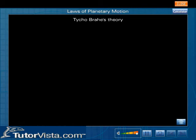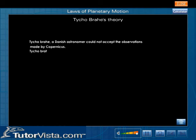Tycho Brahe's Theory: Tycho Brahe, a Danish astronomer, could not accept the observations made by Copernicus. Tycho Brahe's observations were far more accurate than those made by Copernicus.